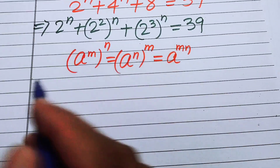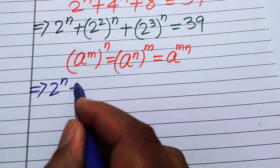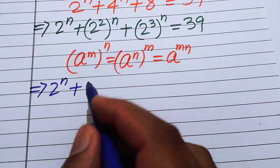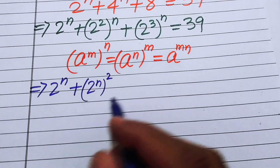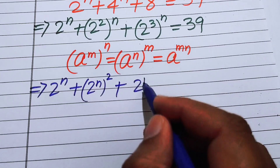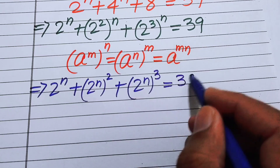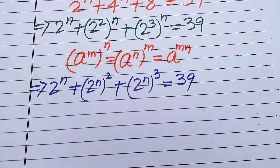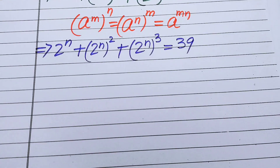Applying this exponential law, we interchange the exponents on each term and get: 2^n plus (2^n)² plus (2^n)³ equals 39. Now we will convert this exponential equation into cubic form.